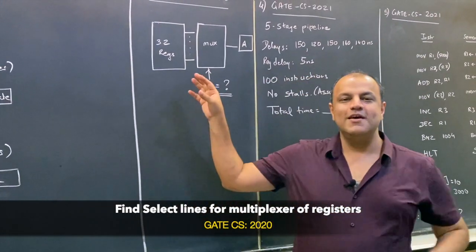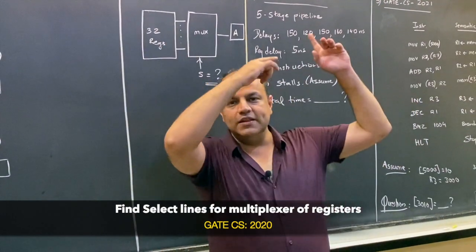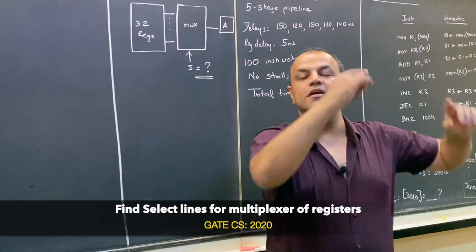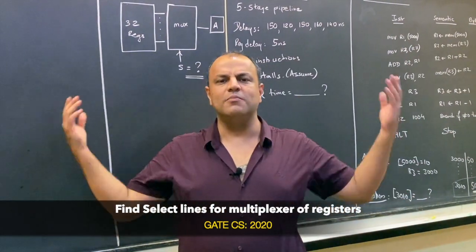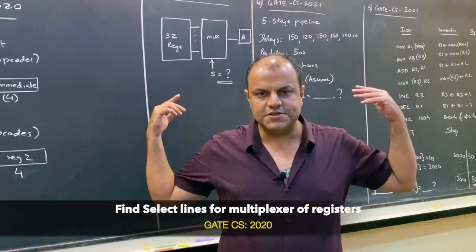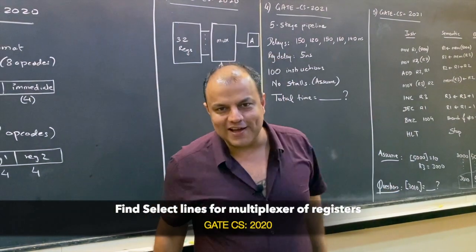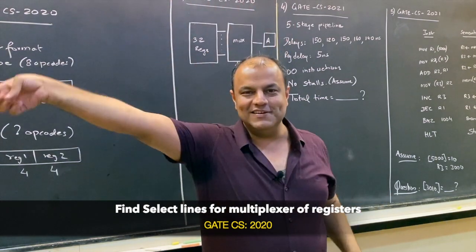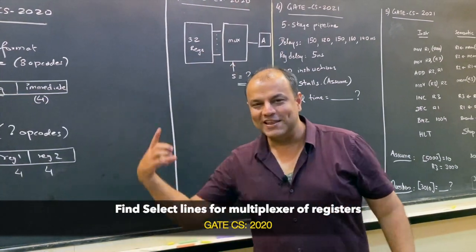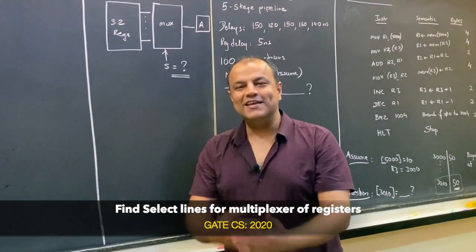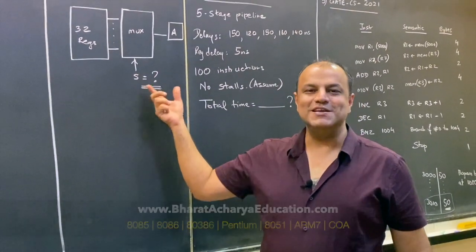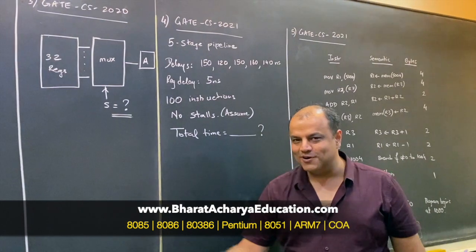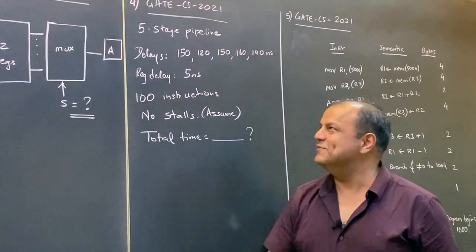This question was given in six lines; I've summarized it into a single picture. There are 32 registers feeding values to the accumulator, with a multiplexer connected so only one register can give the value to the accumulator. This comes from 8085 architecture. The question asks: what should be the size of this selection logic if there are 32 registers?